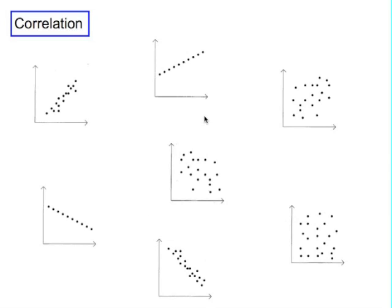When we draw a scatter graph of bivariate data, we're looking to see if there's any correlation between the two variables.